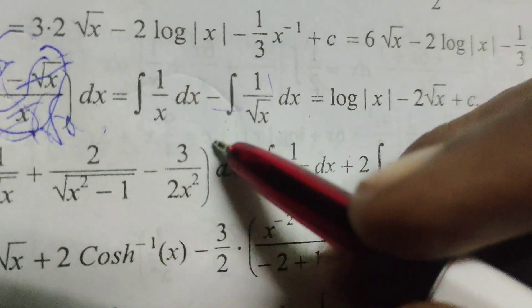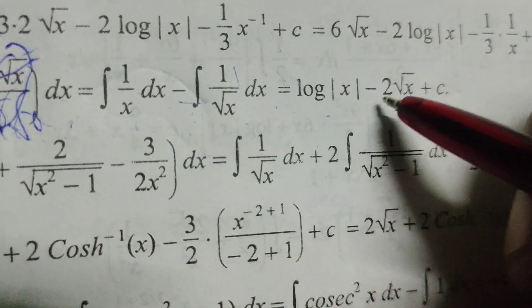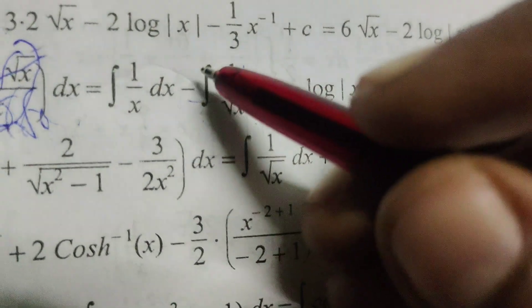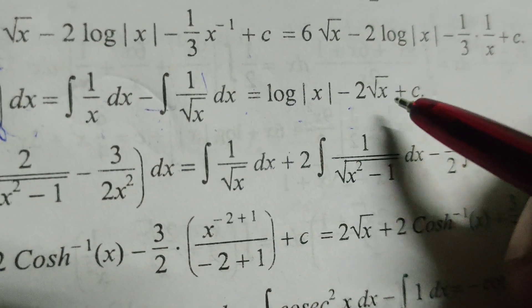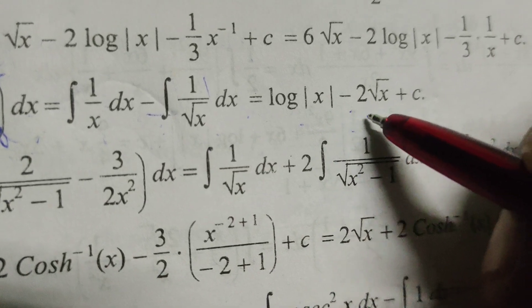Now, integrate this. Integral of 1 by x dx log x log mod x minus integral of 1 by root x means 2 root x. After integrating,